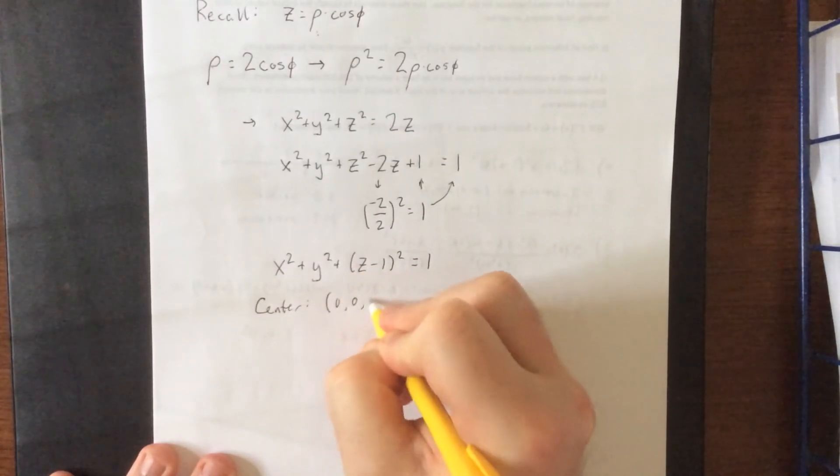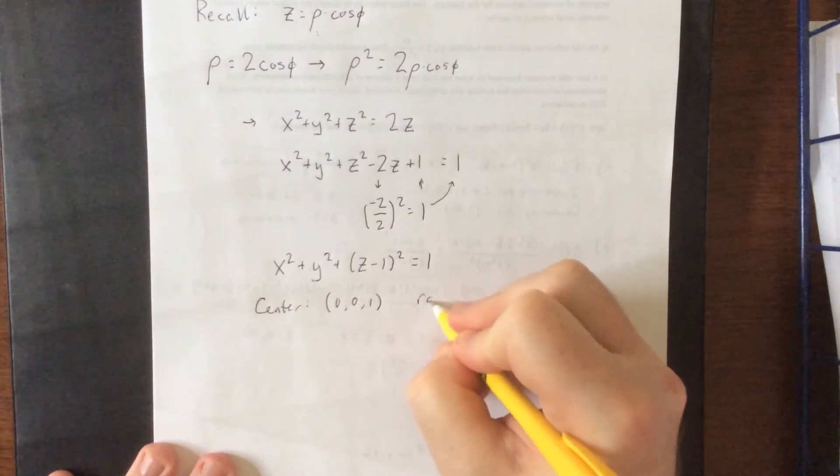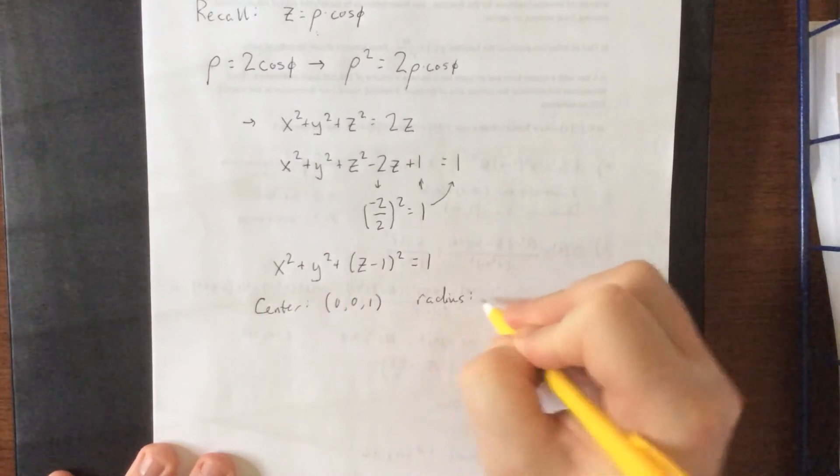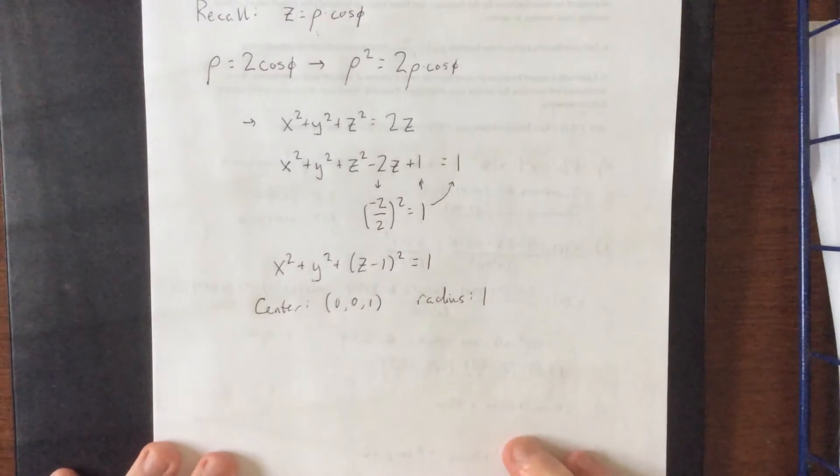The center is going to be at 0, 0, 1, and the radius of our sphere is going to be the square root of the right-hand side, and that will be equal to 1.